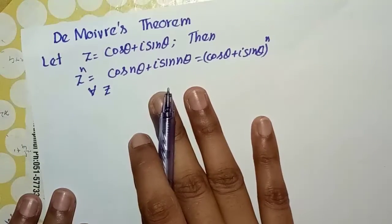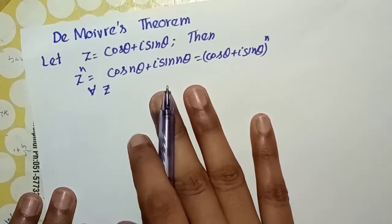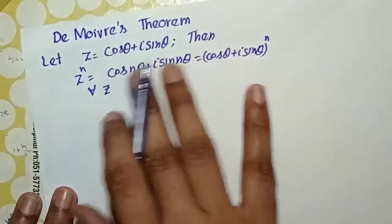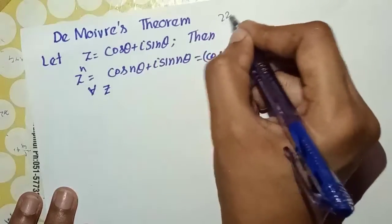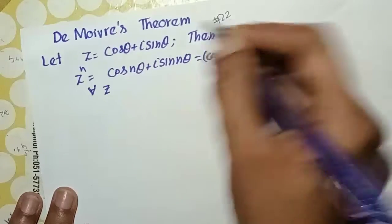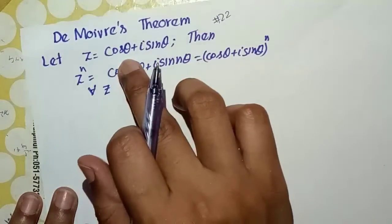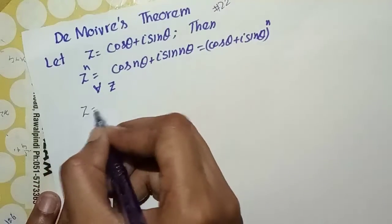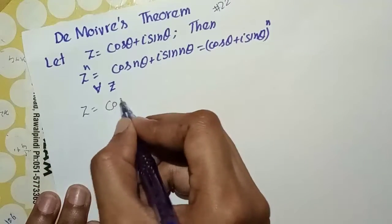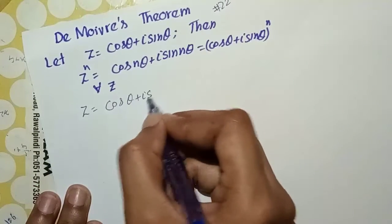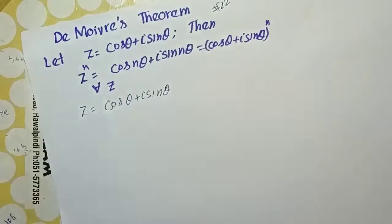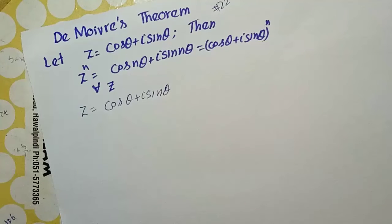We have De Moivre's Theorem. We are doing the first chapter of the Mathematical Methods at page number 22. We have De Moivre's Theorem, where we let z equal cos theta plus iota sin theta. We will prove De Moivre's Theorem by mathematical induction, which we have done in the first year in chapter 8.1.